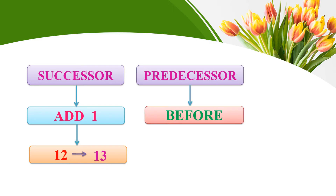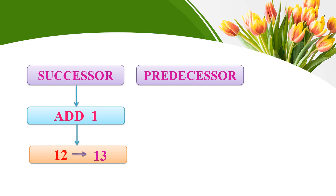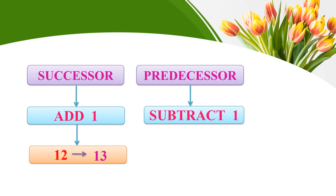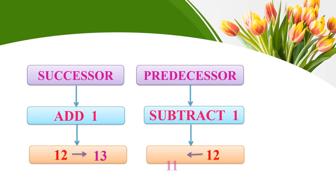Predecessor — predecessor means before. That means we subtract one. We have 12 and we want to find the predecessor of 12, so we subtract one from 12. We will get 11.